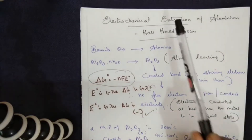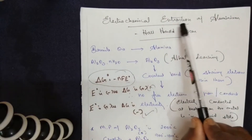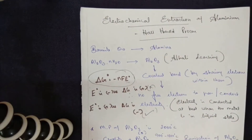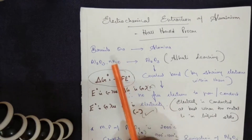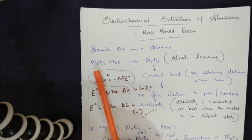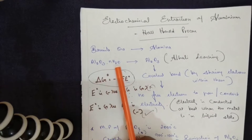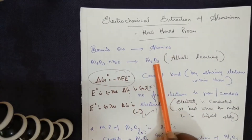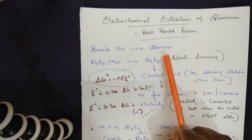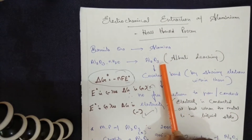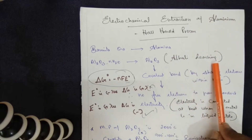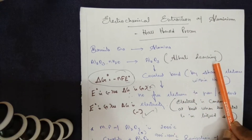In today's class we will see about electrochemical extraction of aluminium by the Hall-Héroult process. Alumina is obtained from bauxite ore. The formula for bauxite ore is Al2O3·nH2O. The formula for alumina is Al2O3. Alumina is concentrated to remove impurities by the method called alkali leaching, which you have learnt about in earlier classes.